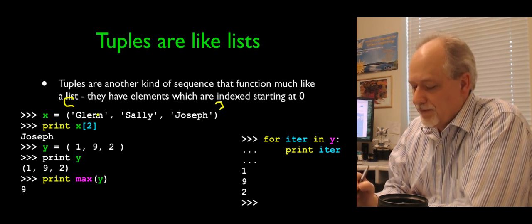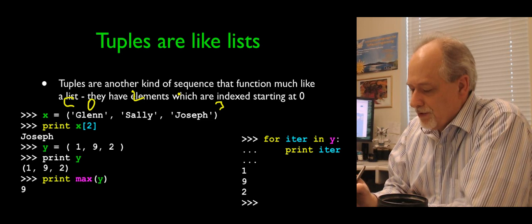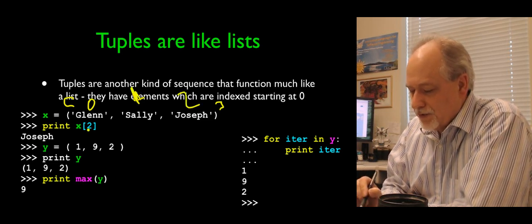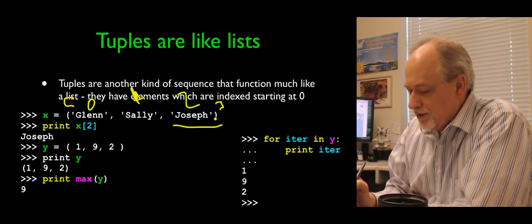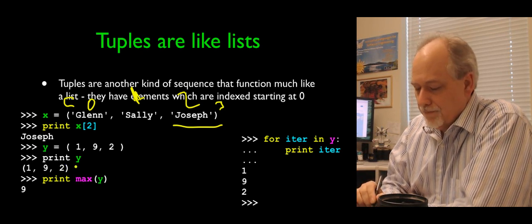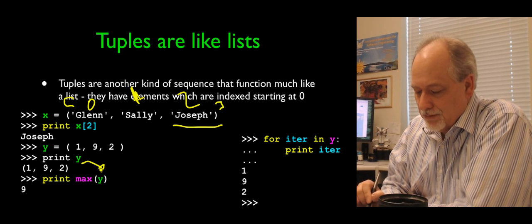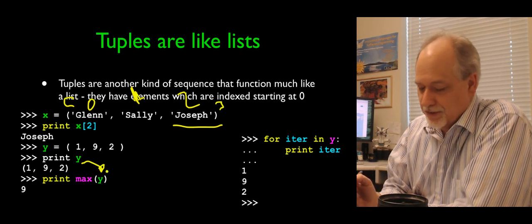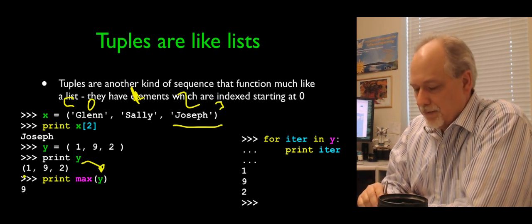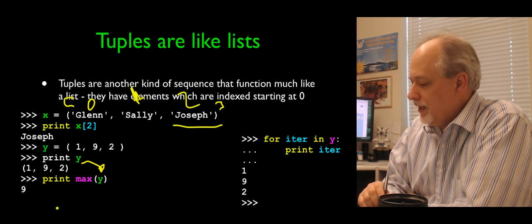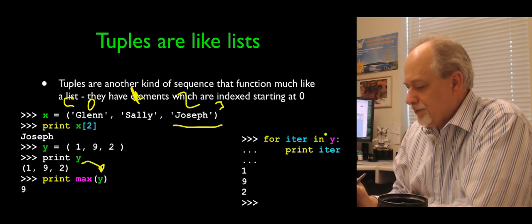The syntax of tuples is pretty much the same as a list, except that we use parentheses instead of square brackets. So here is a three-tuple with three items in it: Glenn, Sally, and Joseph. They are numbered 0, 1, and 2, so x sub 2 is indeed Joseph. We can pass them in as sequences to things like max or min or sum.